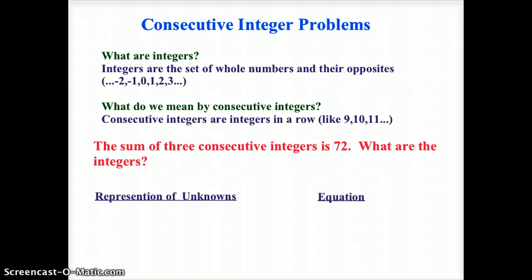When I say numbers are consecutive integers, I'm looking for integers that are in a row, like 9, 10, and 11.